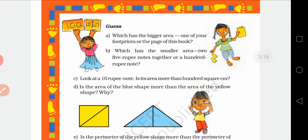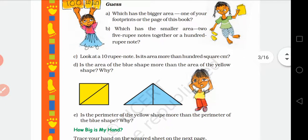Here you will be asked 5 guess questions. First: which has the bigger area — one of your footprints or a page of this Math Magic book? आपको अनुमान लगाना है. Second: two 5-rupee notes together, or one 100-rupee note — which covers more area? यह आपको guess करना है.